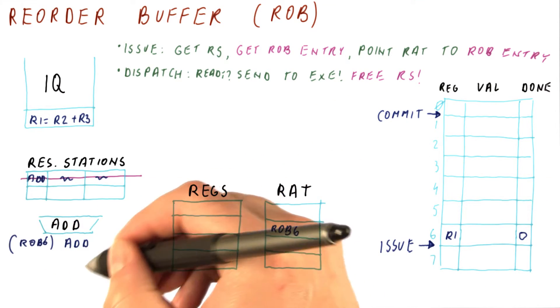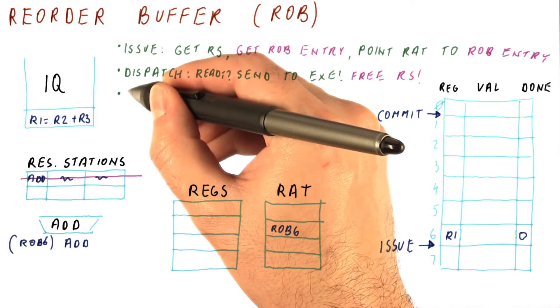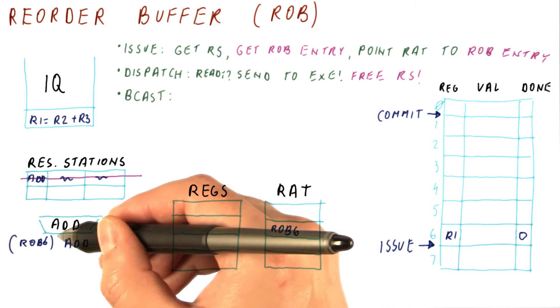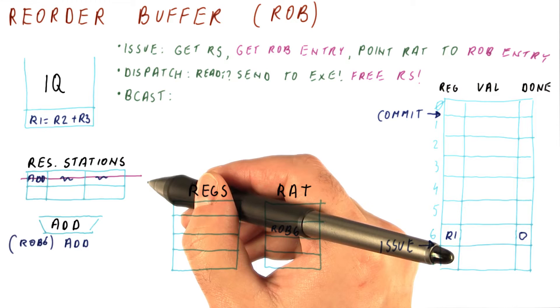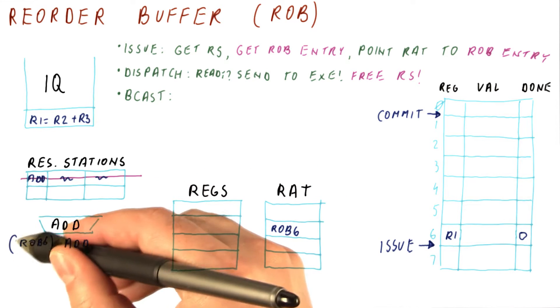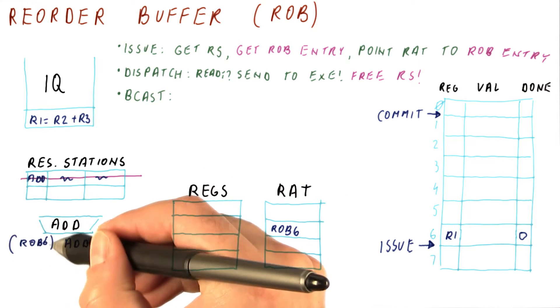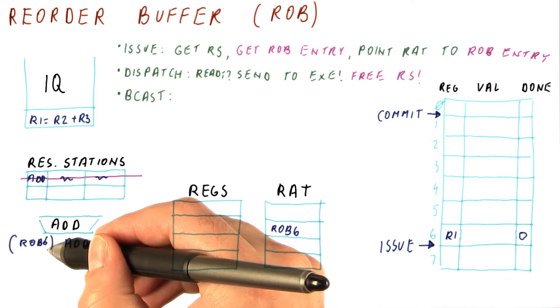Eventually our add produces a result, and when that happens, we will broadcast it. The broadcast of the result happens exactly as before in Tomasulo's algorithm, except that the tag we carry for the result is the ROB entry, not the reservation station number.